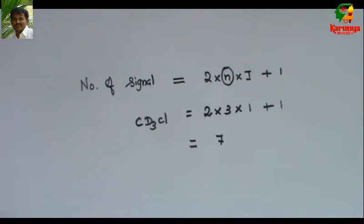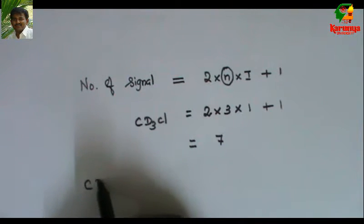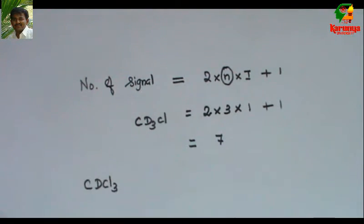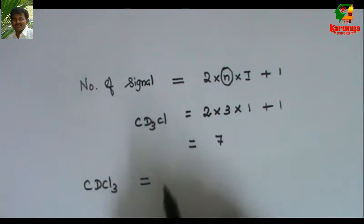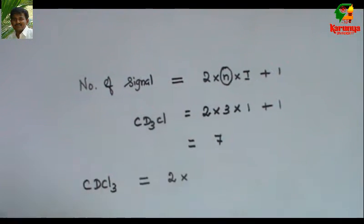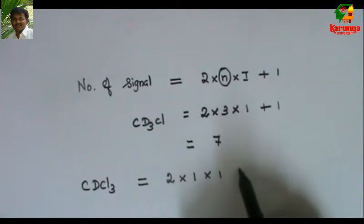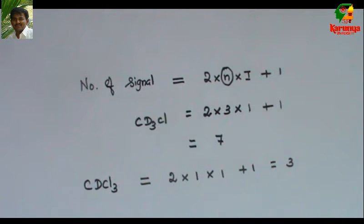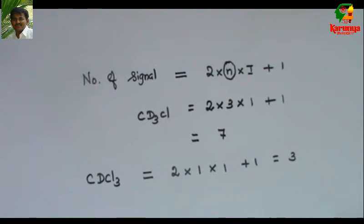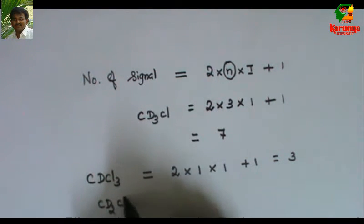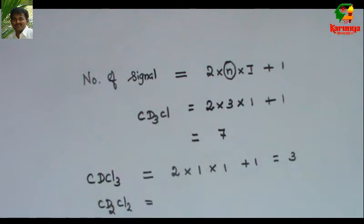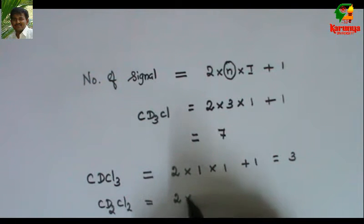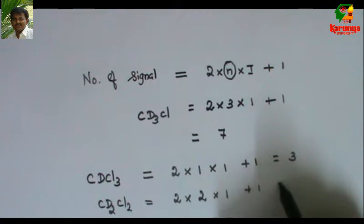What will be the multiplicity for CDCl3? I can apply the same formula: 2N, N is 1 and I is 1 plus 1, we get triplet. What about CD2Cl2? 2N, N is 2, I is 1 plus 1, so it is 5.